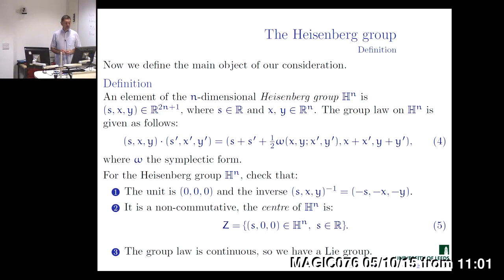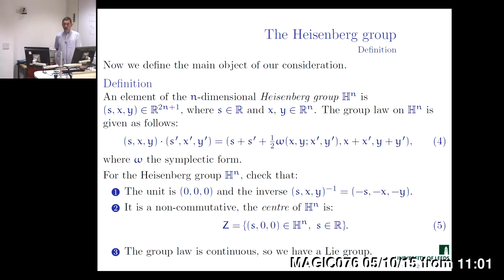Regarding the symmetry of the symplectic form: in the two-dimensional case, the symplectic form is preserved by the group SL(2,ℝ), the group of 2×2 real matrices with determinant equal to one. This group is very important in the study of the Heisenberg group and will appear on several occasions in the course.